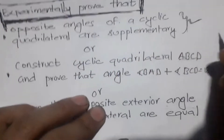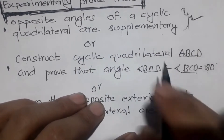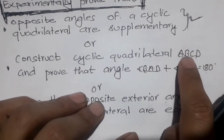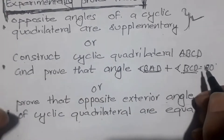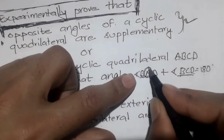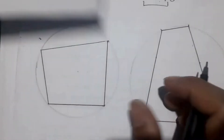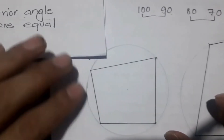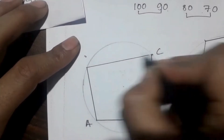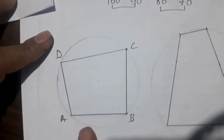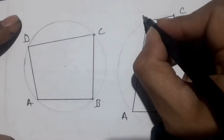We need to know the name of this case. BAD and BCD are 180 degrees. We need to know the name of ABCD. We need to know BAD and BCD. We need to know A, B, BCD. Similarly, we need to know A and BCD.